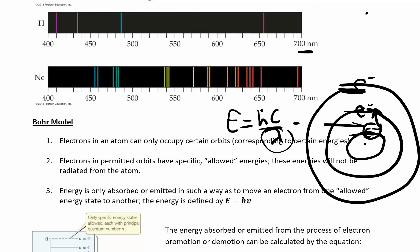And so if it's in the visible range, then we'll see them as different colors. So Bohr basically said electrons in an atom can only occupy certain energy levels. So it can either be here or in this level or in this level, but it can't be in between. You can only be on one of those little circles.